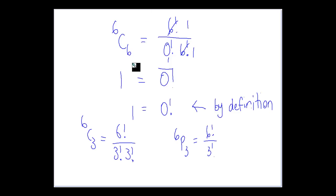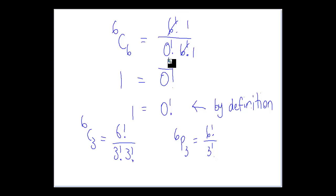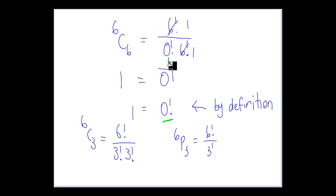Now here's an interesting one. Why is 6C6 equal to 1? We know it's the endpoint of Pascal's triangle, but by definition: 6 factorial over (6 minus 6) factorial times 6 factorial. The 6 factorials cancel, leaving 1 over 0 factorial. If that's going to equal 1, then 0 factorial must by definition equal 1. We can't divide by 0, but since 6C6 equals 1, that's where 0 factorial = 1 comes from.